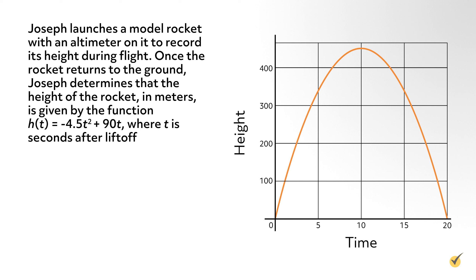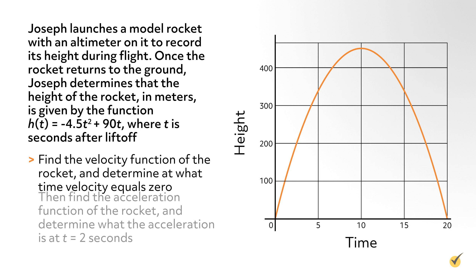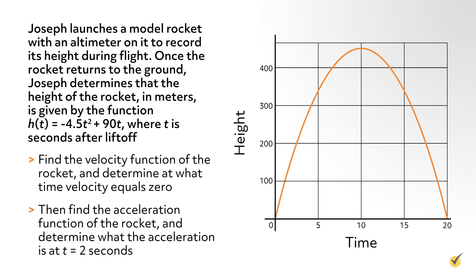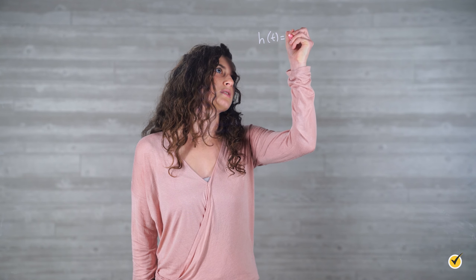Let's try an example. Joseph launches a model rocket with an altimeter on it to record its height during flight. Once the rocket returns to the ground, Joseph determines that the height of the rocket in meters is given by the function h of t equals negative 4.5t squared plus 90t, where t is seconds after liftoff. Find the velocity function of the rocket and determine at what time velocity equals zero. Then find the acceleration function and determine what the acceleration is at t equals 2 seconds.